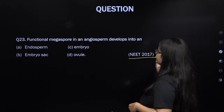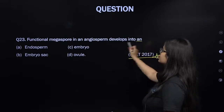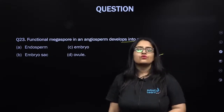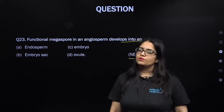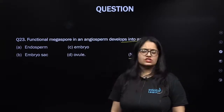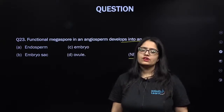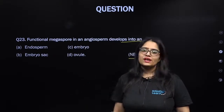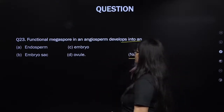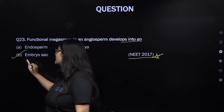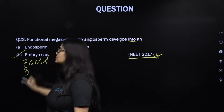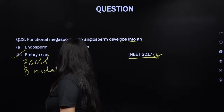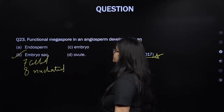From NEET 2017: functional megaspore in an angiosperm develops into the embryo sac. The megaspore mother cell (diploid) undergoes meiosis to form four haploid megaspores; three degenerate and one remains functional. That functional megaspore undergoes three sequential free nuclear mitoses to form a seven-cell, eight-nucleated embryo sac — the female gametophyte. The central cell contains two polar nuclei.